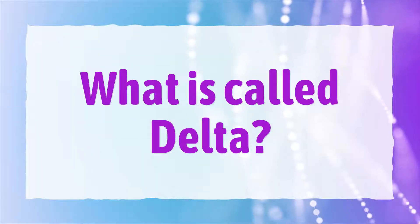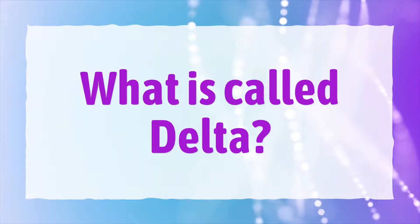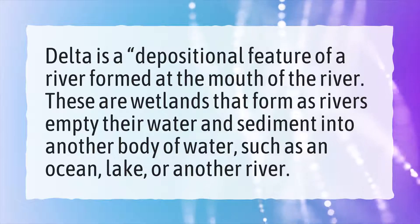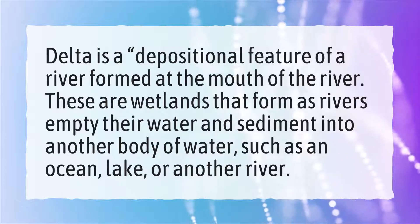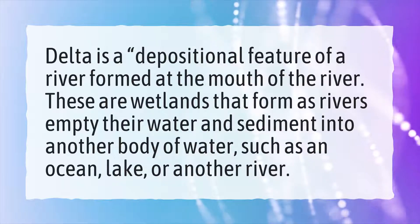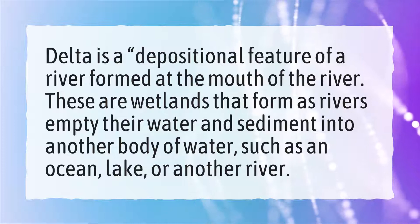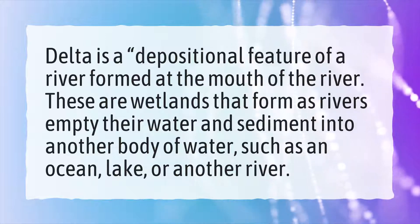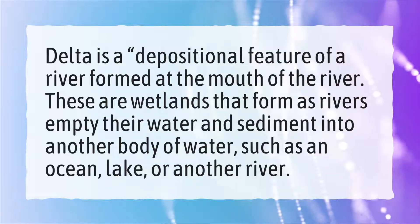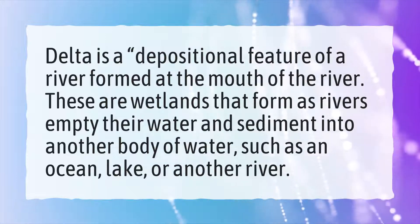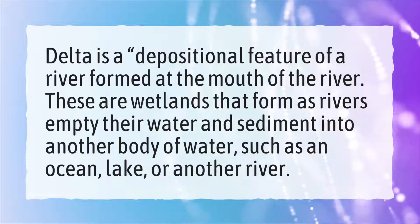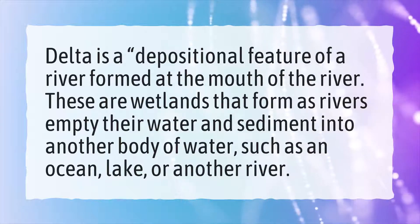What is called a delta? Delta is a depositional feature of a river formed at the mouth of the river. These are wetlands that form as rivers empty their water and sediment into another body of water, such as an ocean, lake, or another river.